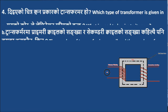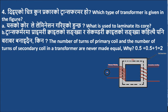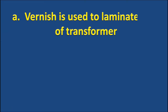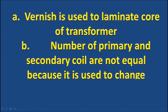Question 4: Which type of transformer is given in the figure? What is used to laminate its core? The number of turns of primary coil and secondary coil in a transformer are never made equal — why? Answer: The given transformer is a step-down transformer. The secondary coil is used to laminate the core. Primary and secondary coils are not equal because the transformer is used to change the voltage of AC.